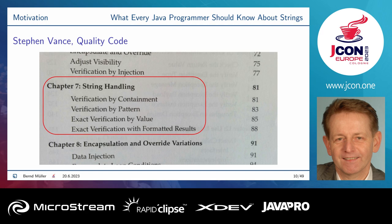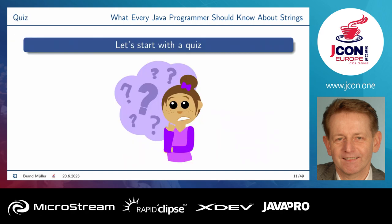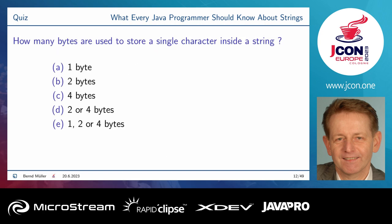Before I tell you something, you have to tell me something. Don't be shy — you're Java developers, raise your hands. If you think about a string and look at a single character inside it, is it: A — one byte, B — two bytes, C — four bytes, D — sometimes two or four bytes, or E — sometimes one, two, or four bytes?